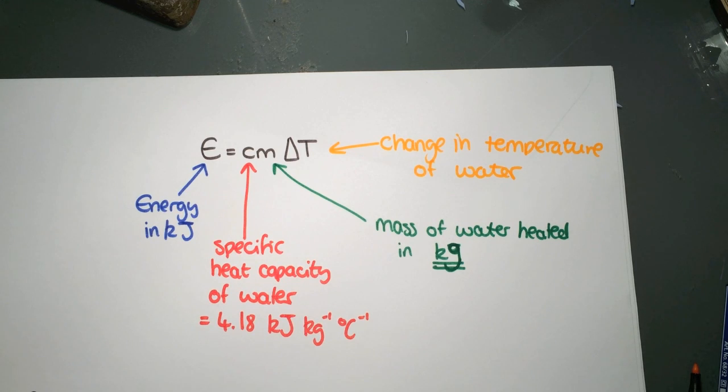The different parts of the equation are shown here. Energy is always measured in kilojoules. C is the specific heat capacity of water. It's 4.18 kilojoules per kilogram per degrees Celsius. You can find this in the front of your data book, so you don't need to remember this value.